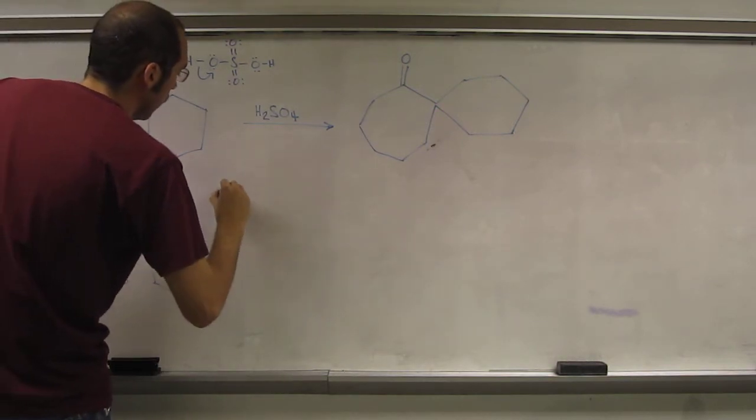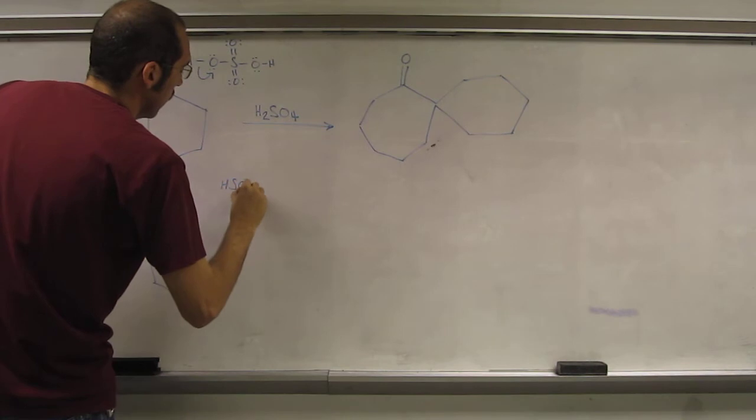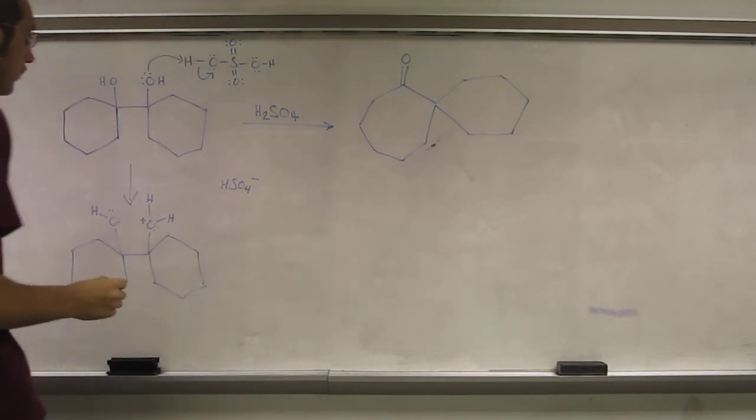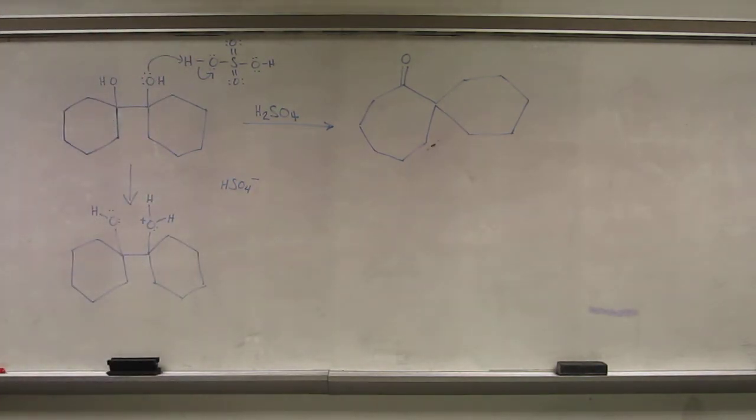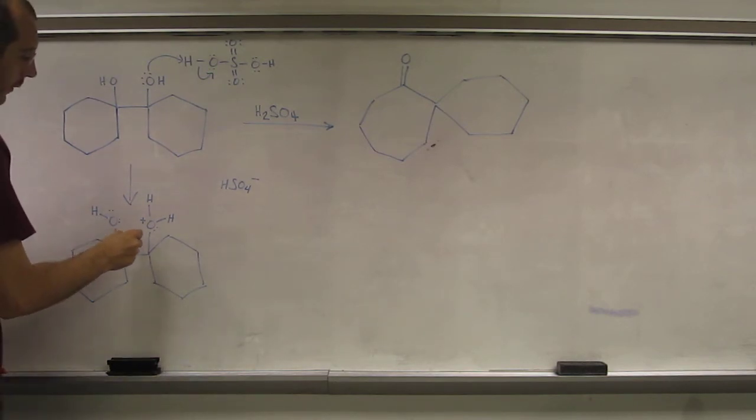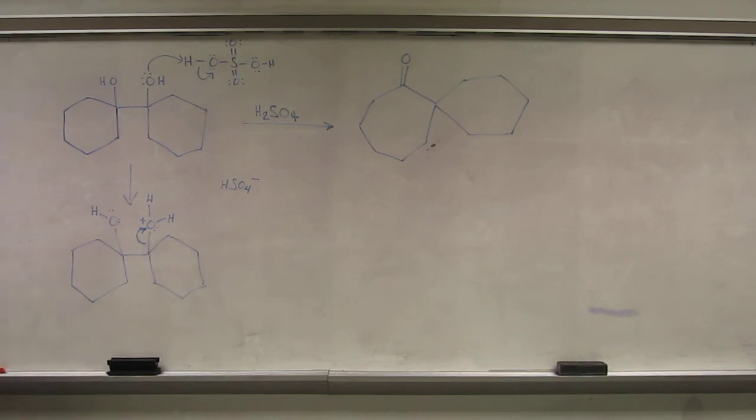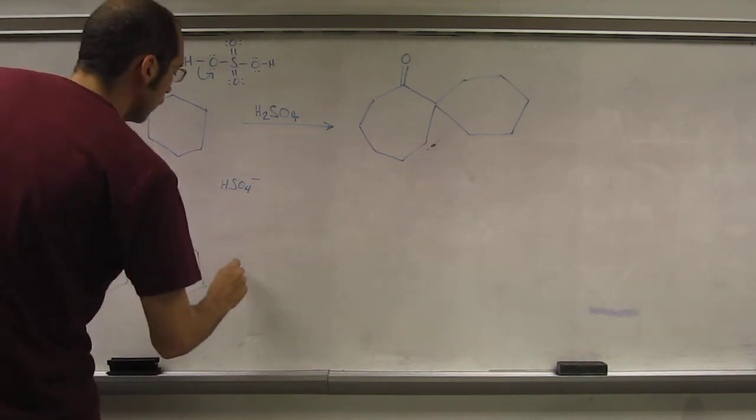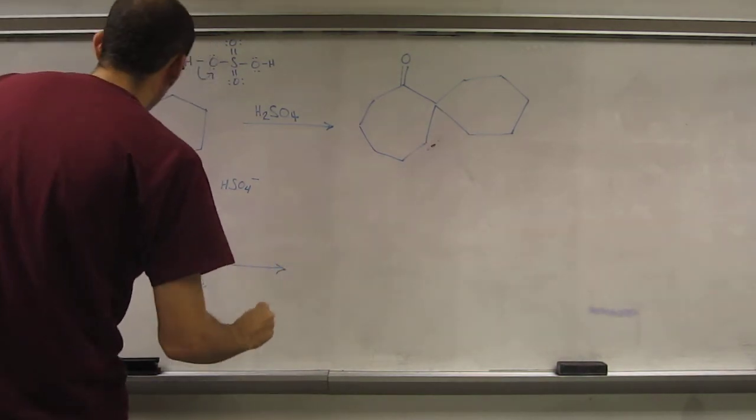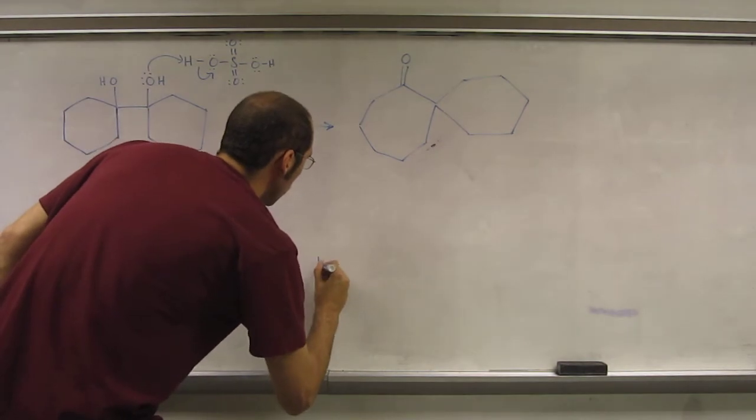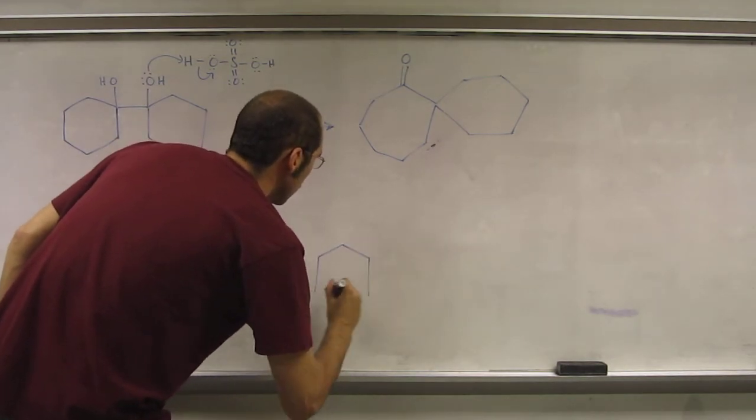And of course, we also have HSO4-. So the next step, of course, would be we've got a good leaving group, stable molecule in and of itself, so it's gonna be a good leaving group. Water. So water leaves on its own, forming the tertiary carbocation.